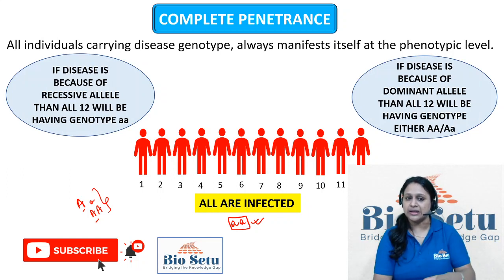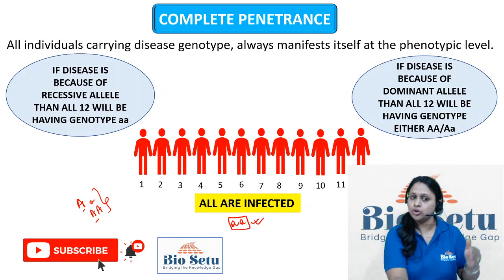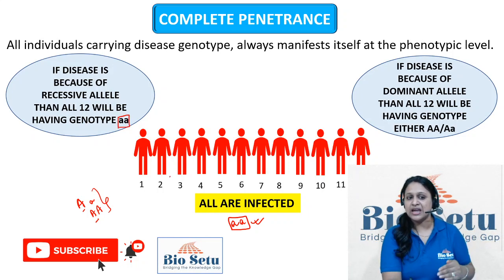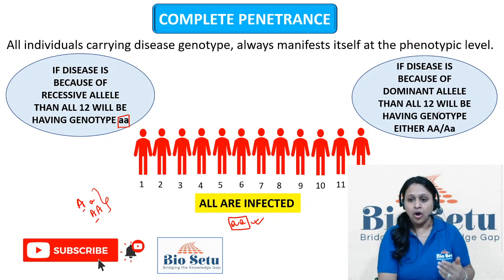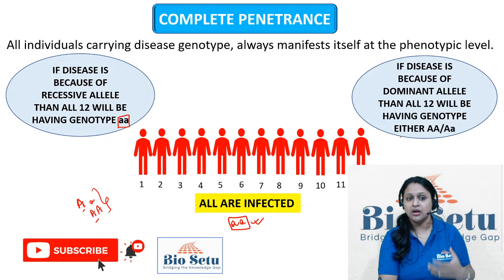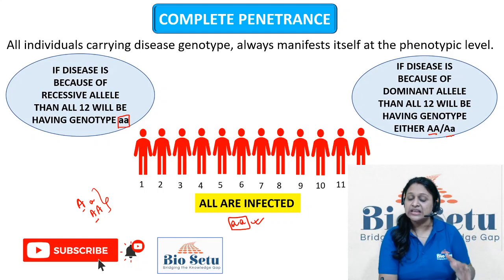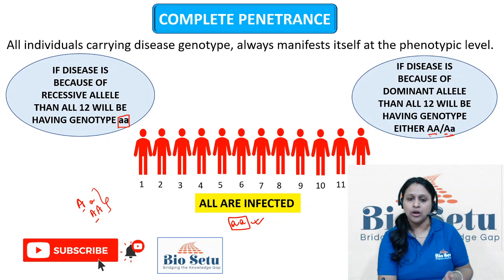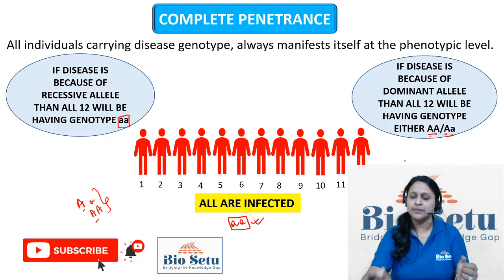So when we talk about complete penetrance, if there is a genotype, there will be an expression. If a disease is caused by a recessive allele, all 12 individuals will have a homozygous recessive genotype, because two alleles are compulsory for recessive expression. If a disease is caused by a dominant allele and 12 individuals are affected, their genotype is either homozygous dominant or heterozygous dominant, since one single allele is sufficient for a dominant trait to express itself. This is what we understand by complete penetrance.